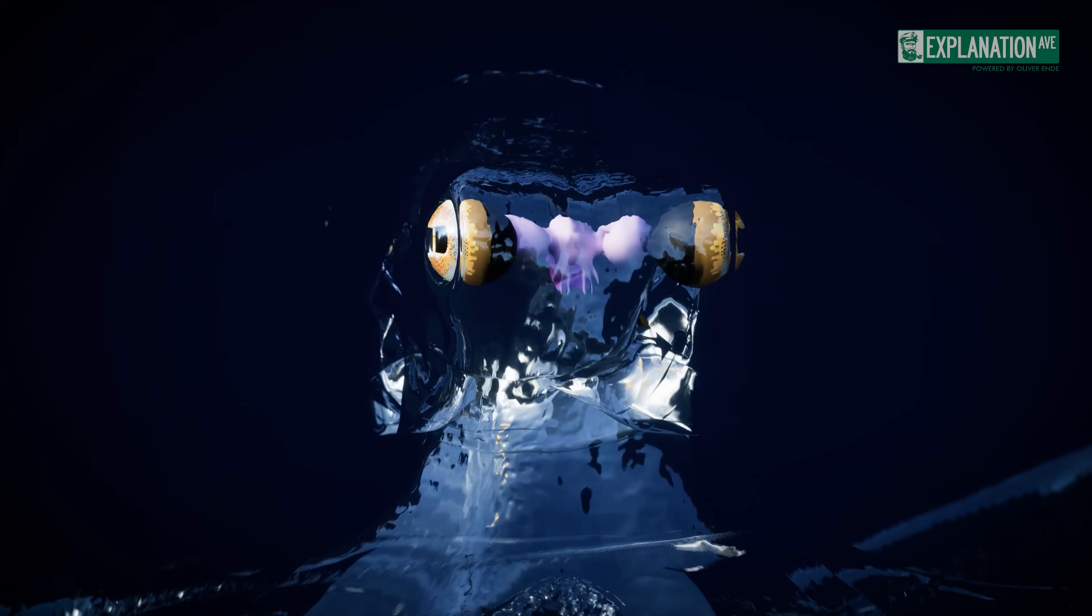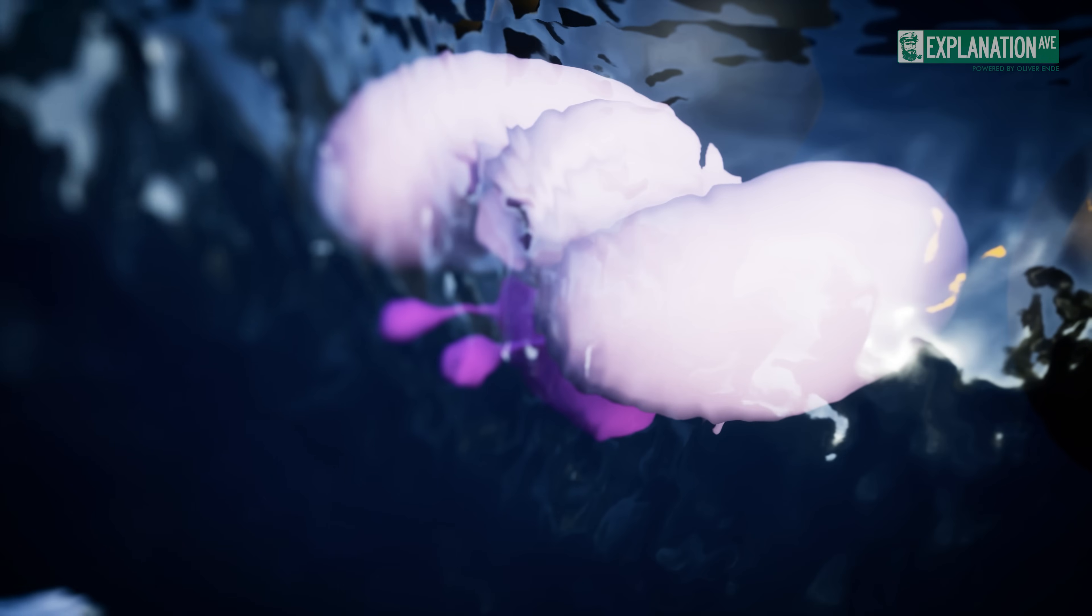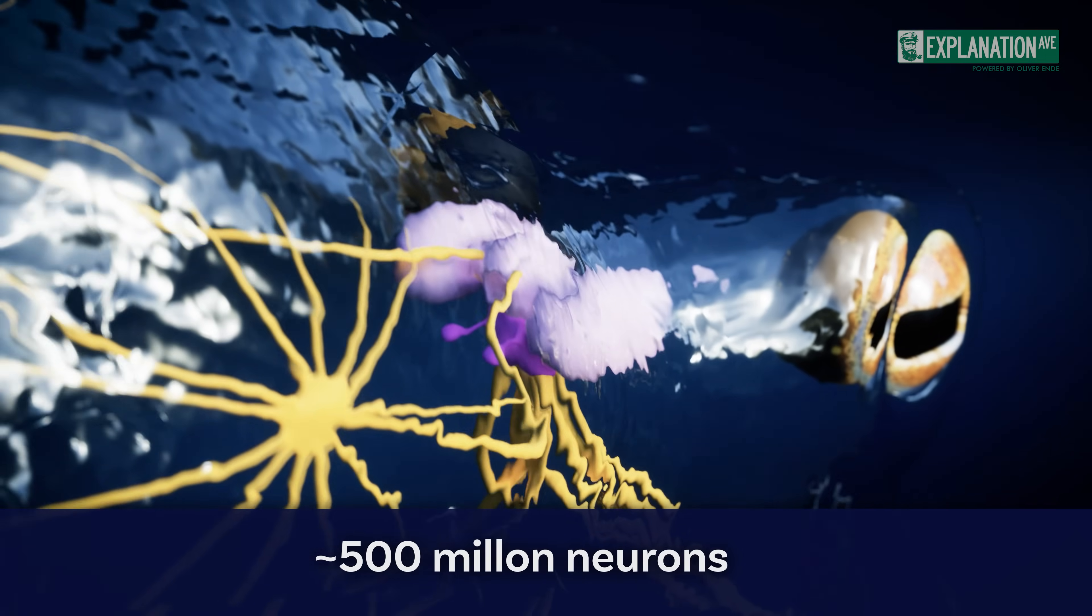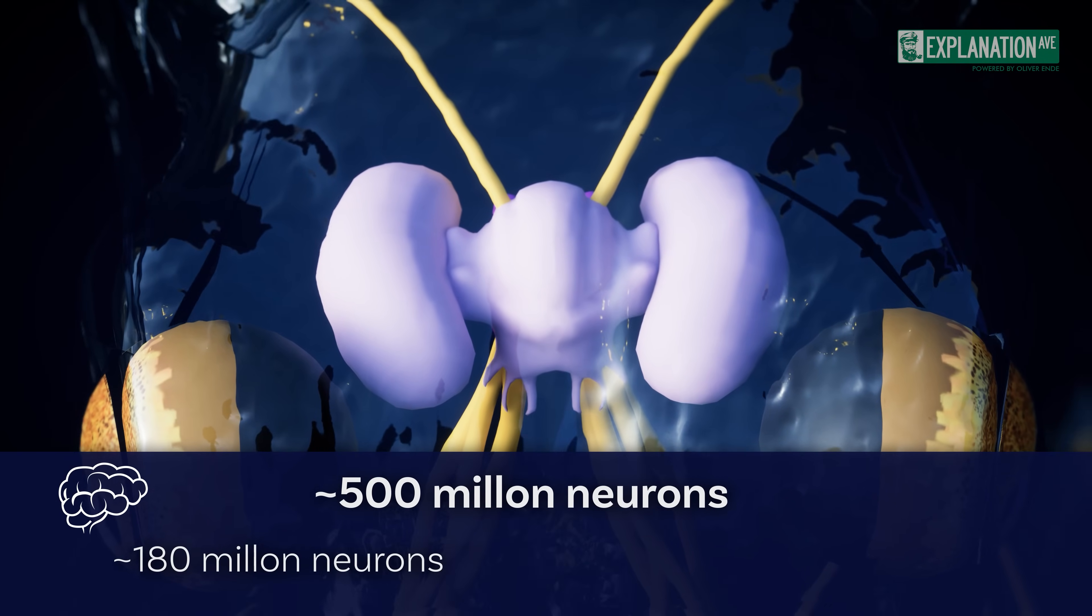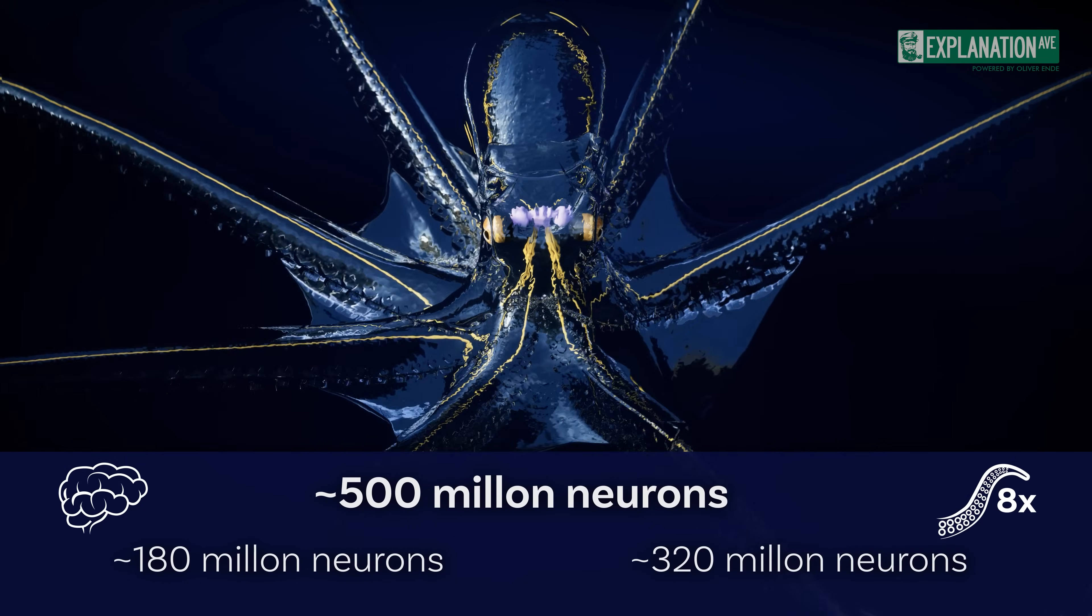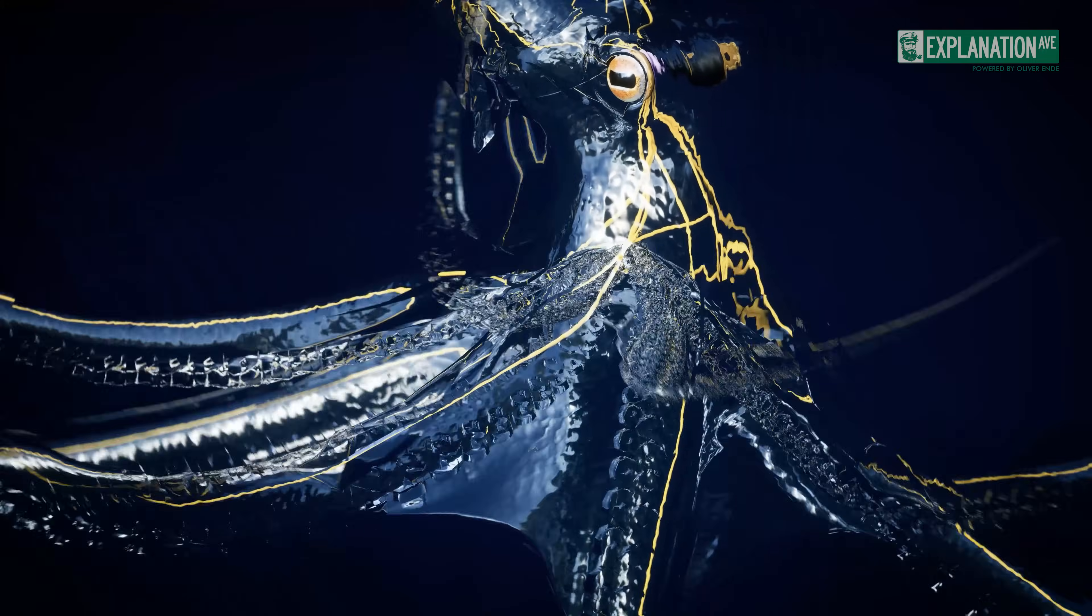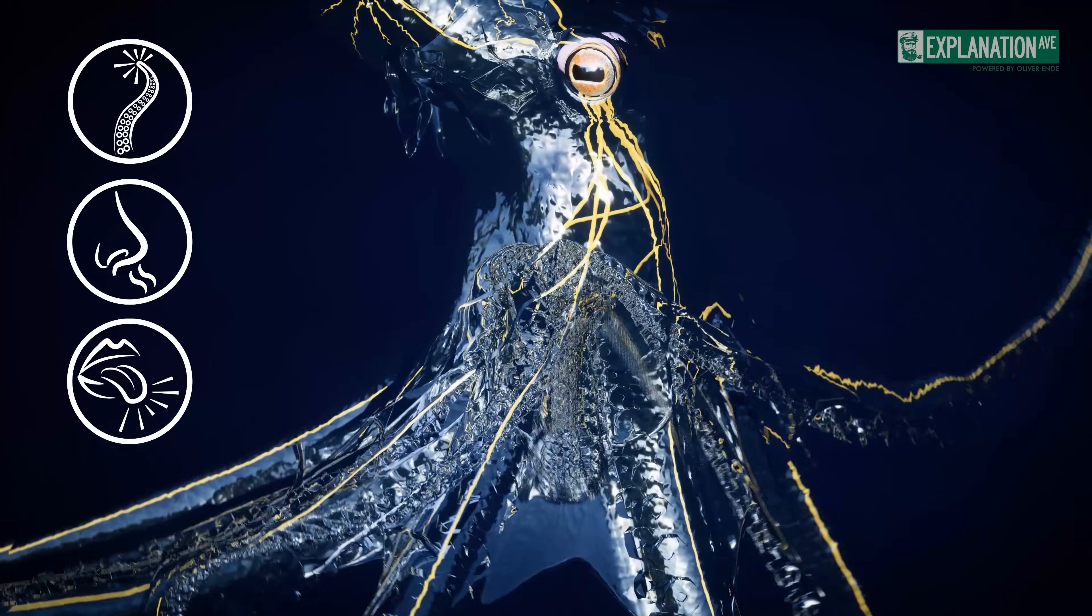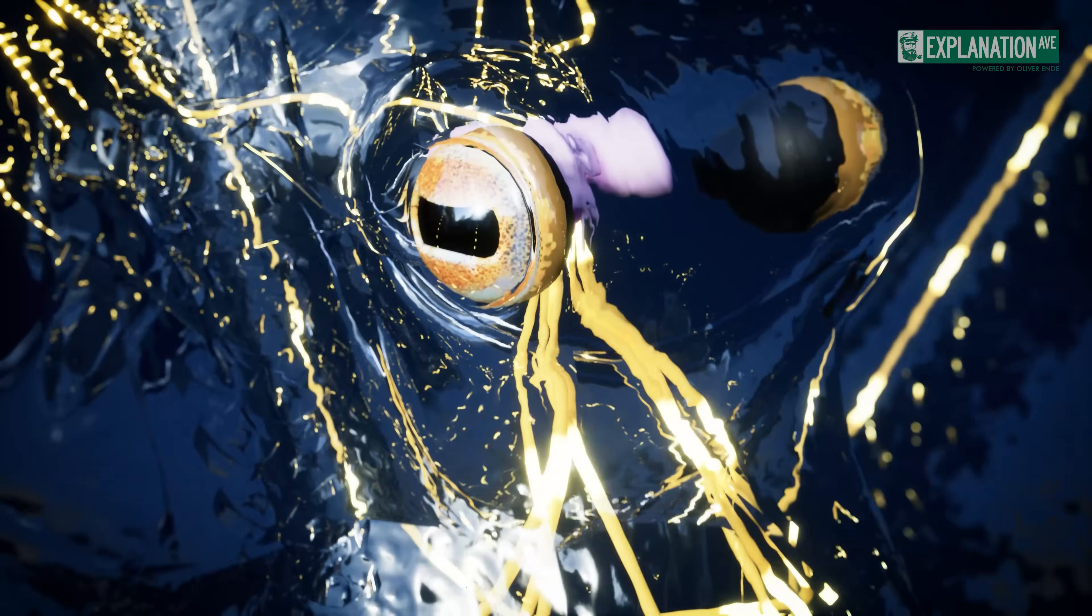The brain of the octopus, localized between the eyes and structured in a ring like a donut around the esophagus, is remarkably different from that of many other creatures. With around 500 million neurons similar to dogs, the nervous system of this mollusk is fascinating. Around 180 million neurons are concentrated in the central brain, with the remaining 320 million distributed across the ganglia of its eight arms. Each arm is partially autonomous due to clusters of neurons, with these neurons connected by suction cups, enabling the octopus to recognize touch, smell and taste. Each arm can act independently and transmit important information to the central brain.